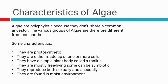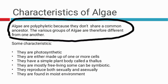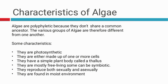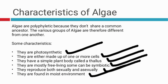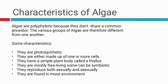The characteristics of algae: algae have different ancestors, but the characteristics they do share is that they are photosynthetic. They could be unicellular or multicellular, that is filamentous. They have a simple plant body called a thallus — they don't have true roots, stem, and leaves. They are mostly free-living and can be symbiotic. They reproduce both sexually and asexually, and they are found in moist environments.